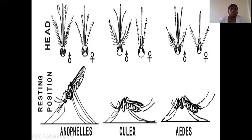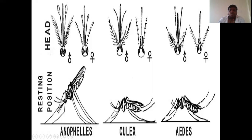Another distinguishing feature is the resting position. By looking at resting position alone you can identify the mosquito. Anopheles will always have a 45-degree inclination - you can see the angle as it sits. Culex and Aedes do not have that angle; they rest parallel to the surface.